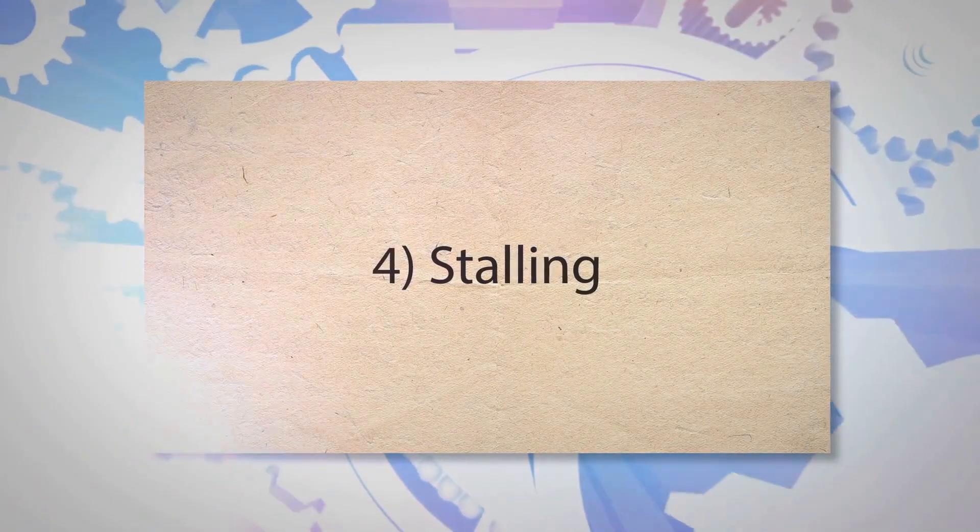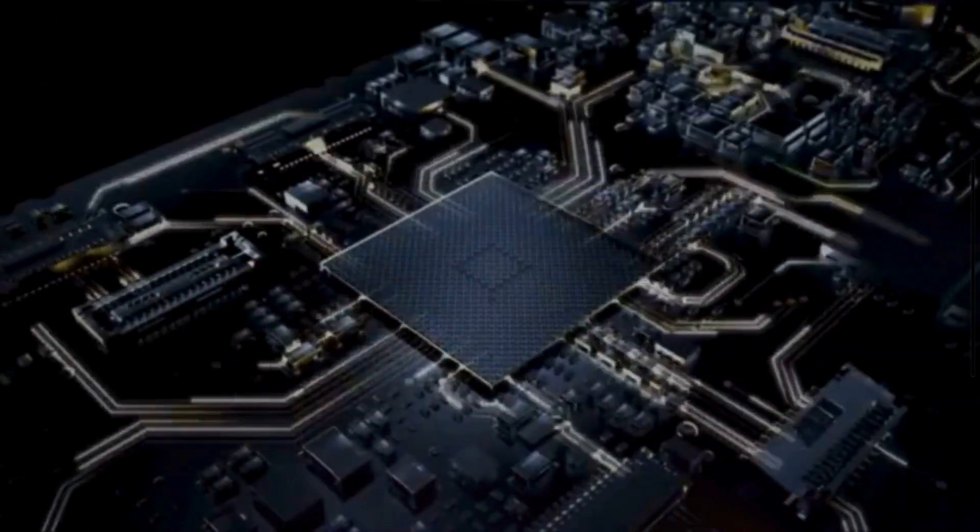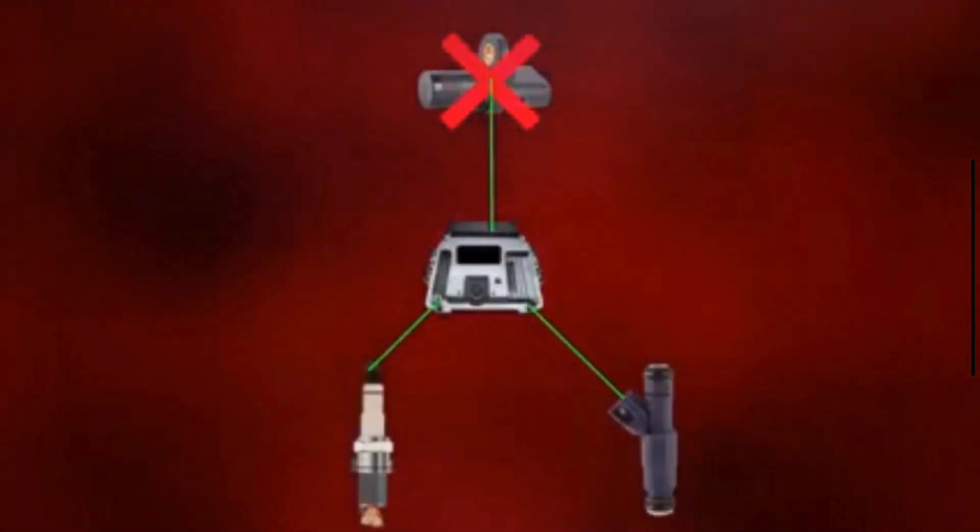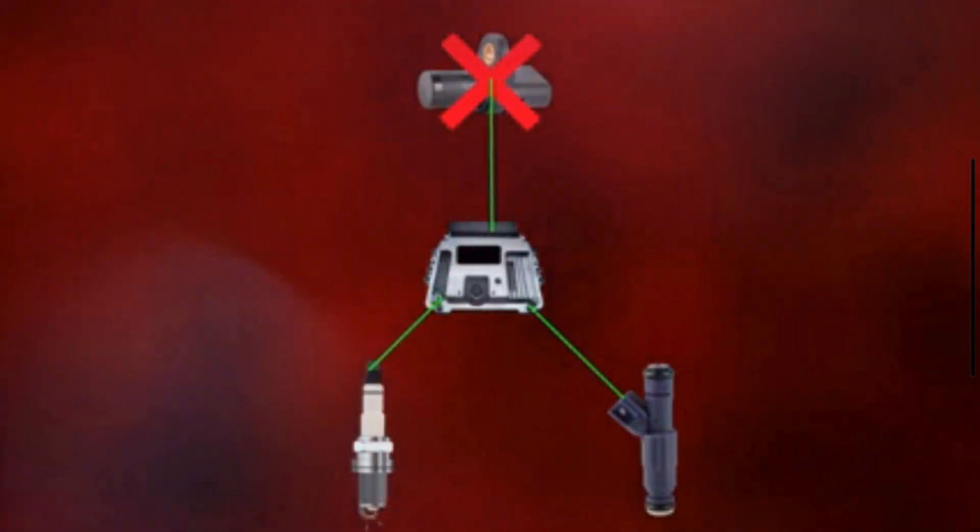4. Stalling. If the crankshaft position sensor intermittently fails while driving, the ECM may lose track of the crankshaft's position. This loss of data can cause the engine to stall because the ECM can no longer control the timing of the fuel injection and ignition accurately.